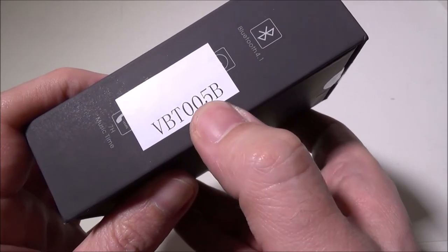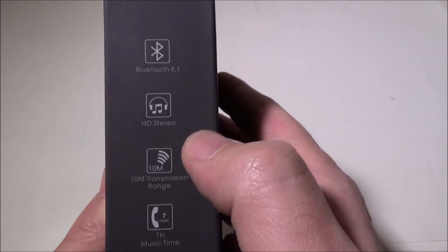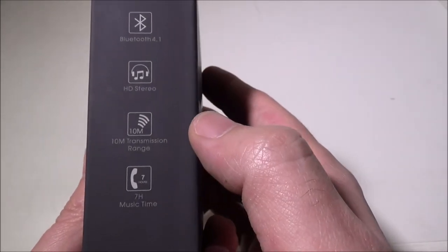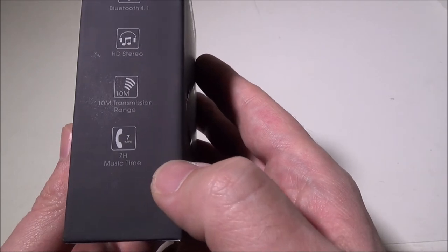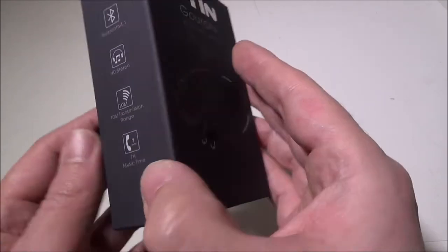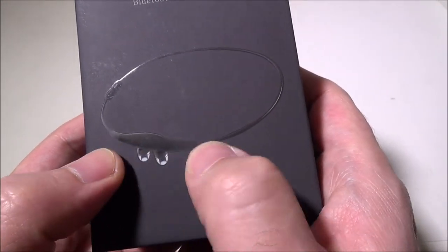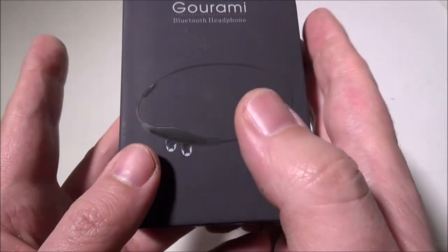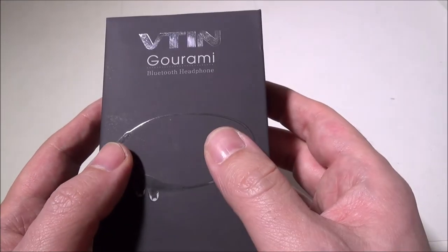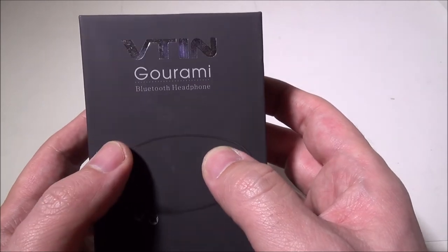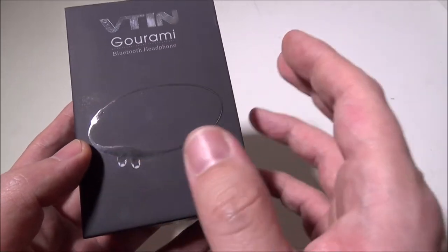You do get Bluetooth 4.1 on this, HD stereo, that 10 meter or 33 feet Bluetooth range that we usually see, and up to seven hours of music playback time. These guys are magnetic on the ends so you can clip them together to make a necklace style around your neck, so you don't have to worry about them falling off if you're doing a workout or something like that.